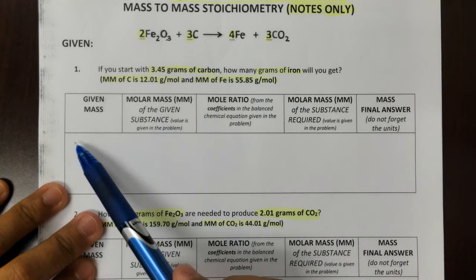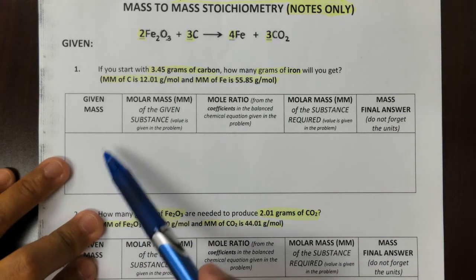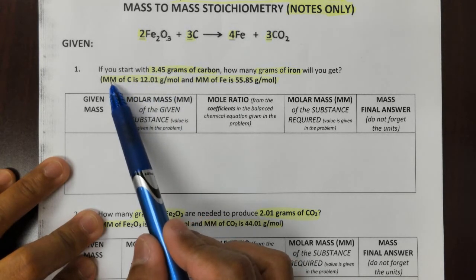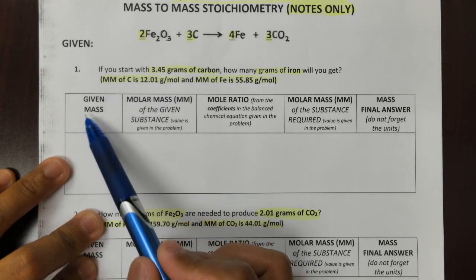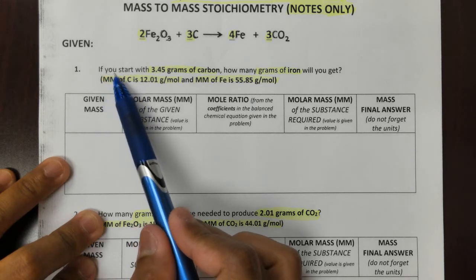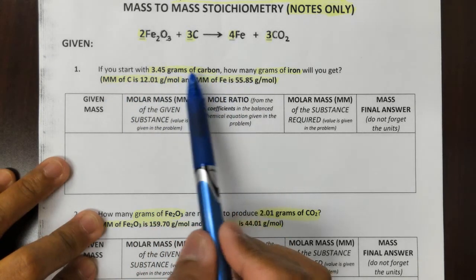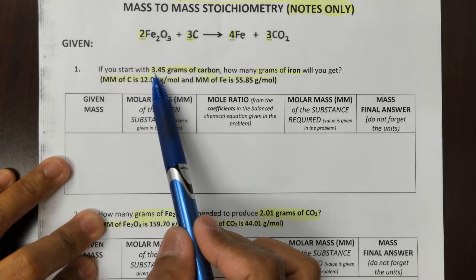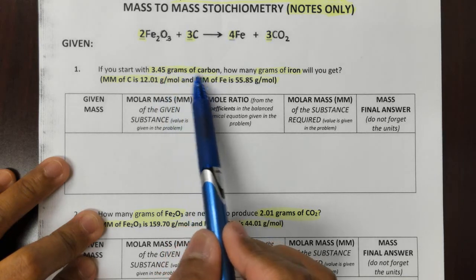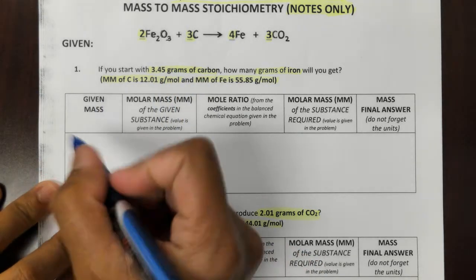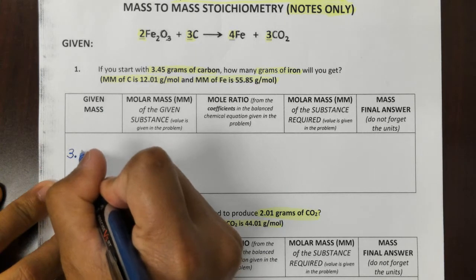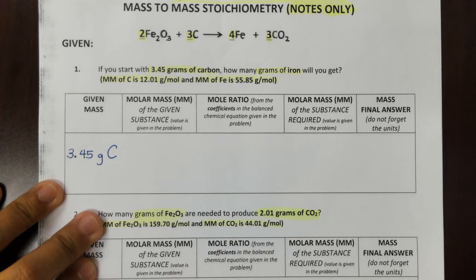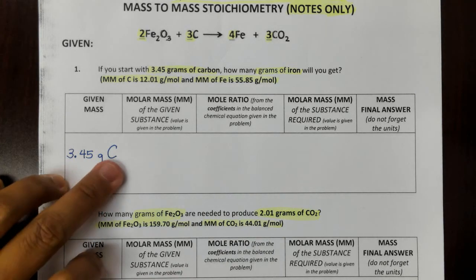Now let's follow this outline to solve the problem. Our given mass — and do not confuse this with the molar mass; molar mass is not the given mass. The given mass is the one in the statement itself, and there is only one number there. So obviously, 3.45 grams of carbon is our given mass. Let's copy that down: 3.45 grams C.